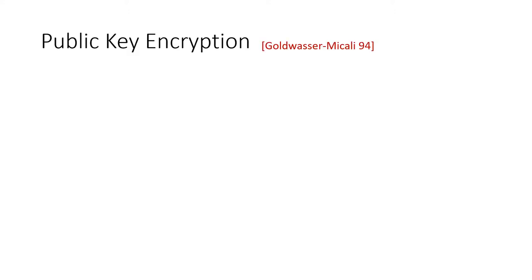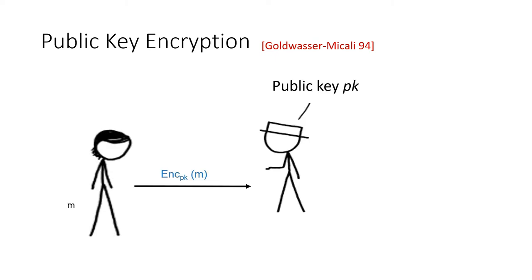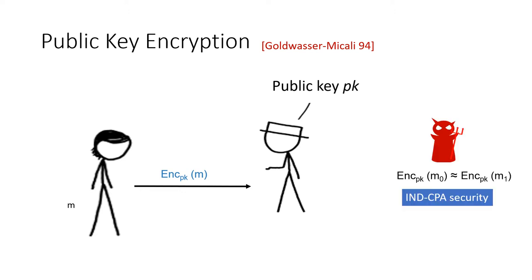The notion of public key encryption, which we all know and love, allows Bob to set up and publish a public key in such a way that Alice can send encrypted communication to Bob, which can only be decrypted given knowledge of the corresponding secret key. Any adversary that observes this communication but cannot compute the secret key will be unable to distinguish encryptions of one message from those of another. This notion of security is called CPA security, alternatively security against chosen plaintext attacks.